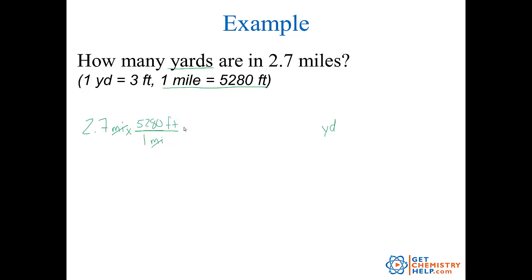Now I've canceled miles. Next, I have to get rid of feet and turn feet into yards. One yard has been defined to be exactly three feet. If I want feet to cancel, I put three feet on the bottom and one yard on top. So feet cancels and I'm left with yards. I take this and punch it into the calculator: 2.7 miles times 5,280 feet, but the three feet is on the bottom, so I divide by three. So 2.7 times 5,280 divided by three — and I got 4,752 yards.